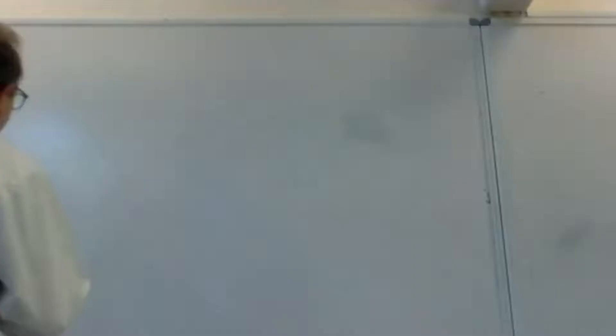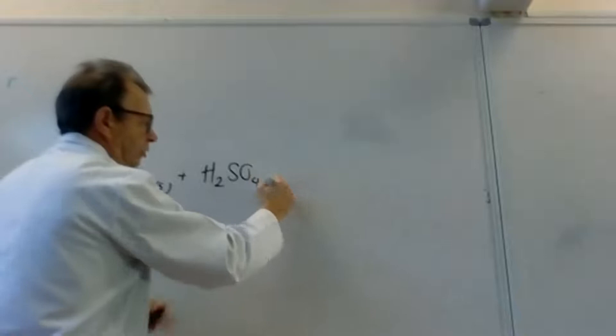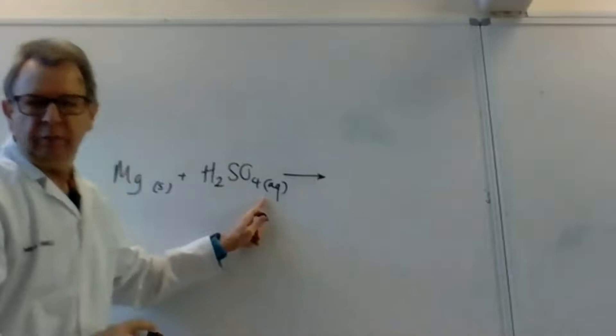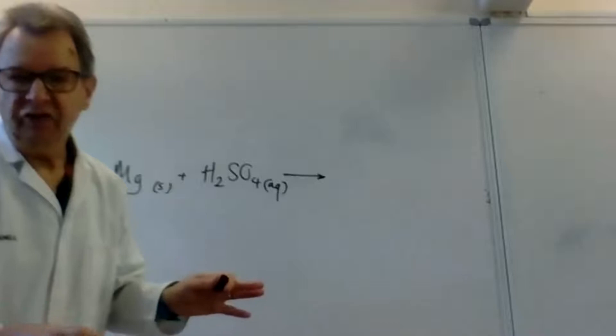You probably know what a mole is. What I'm going to do is give you three different ways of calculating moles. Why do we bother about moles? Well, if I have the equation Mg solid reacts with H₂SO₄ aqueous — meaning dissolved in water — this is an acid and a metal, so it's going to produce a gas and a salt. The salt is MgSO₄ dissolved in water, and H₂ as a gas.